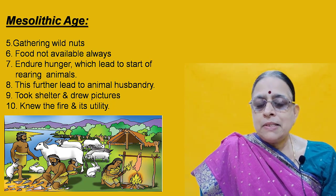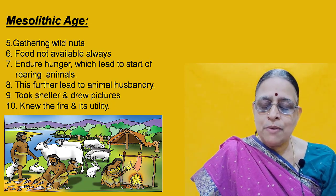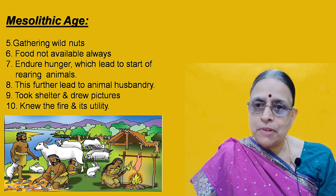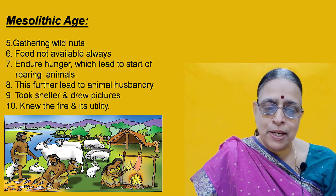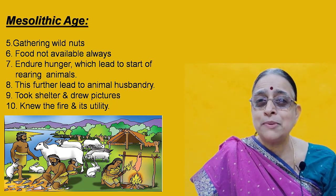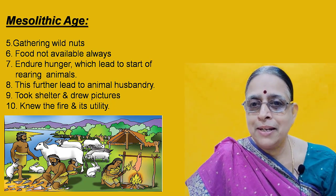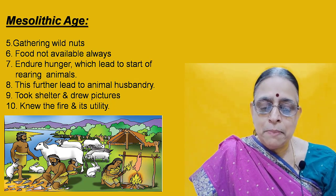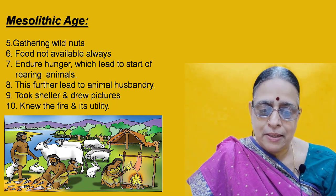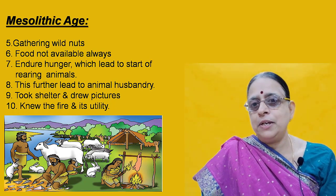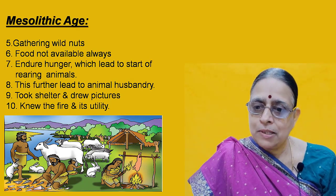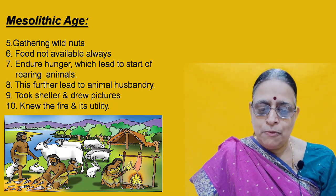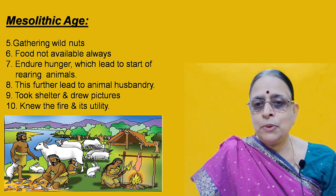This led him to start rearing animals — cattle rearing. While going for hunting, some animals were wounded. He used to bring those wounded animals or their offspring home. Sometimes the mother would die during hunting, and he would bring back the small ones. He began rearing them at home, giving him a secured source of food. This eventually led to animal husbandry.